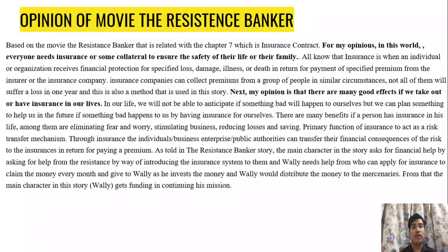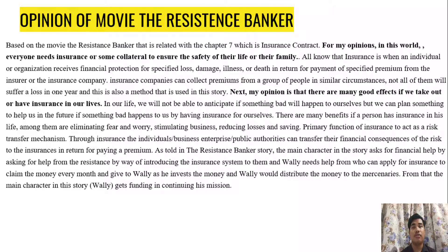Next is my opinion of the movie The Resistance Banker. Based on the movie, which relates to Chapter 7 on insurance contracts, in this world everyone needs insurance or some collateral to ensure the safety of their life or their family. Insurance is when an individual or organization receives financial protection for specified loss, damage, illness or debt in return for payment of a specified premium from the insurer or insurance company. Insurance companies can collect premiums from a group of people in similar circumstances, and none of them will suffer a loss in one year. This is also a method used in this story.